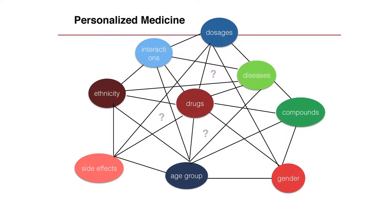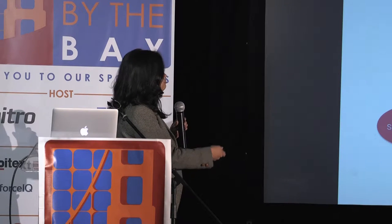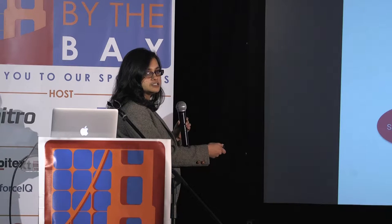My goal is to extract medical attributes such as age groups, side effects, ethnicity, and the drugs being studied from clinical trials as well as from FDA drug labels, and then figure out how they are related. For instance, a drug and a disease can be related because that drug treats that disease, or because that disease is a side effect of taking the drug. So I want to dig through and find out the relations between these entities — not all of them will be connected, but some will.